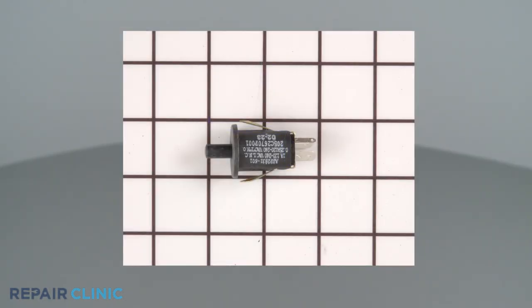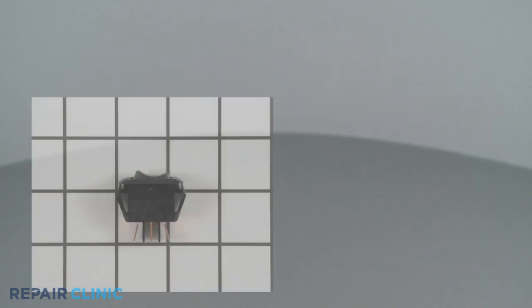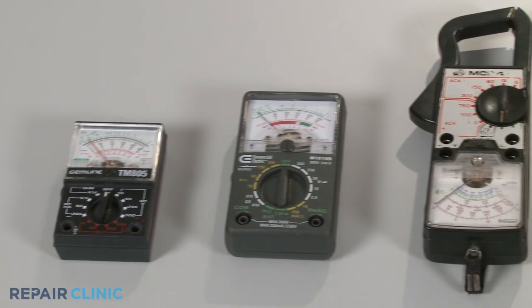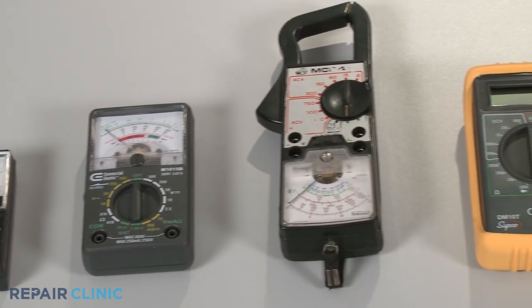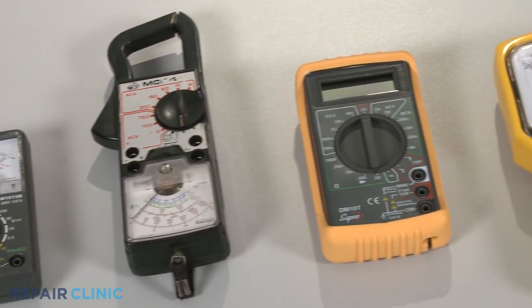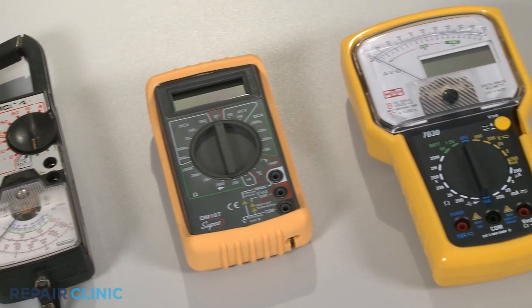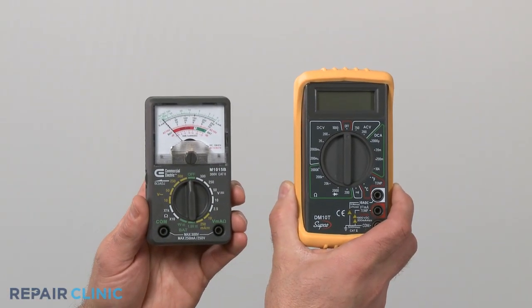Switches come in many shapes and sizes, but all of them can be tested for continuity. You can choose from a variety of multimeters to perform the test. For this demonstration, we will use both analog and digital models.